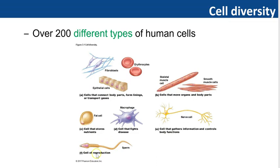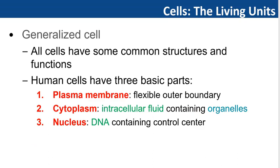There are some other cells as well, like fat cells, macrophages, and the sperm cell — the male sex cell or reproduction cell — which has a tail that allows it to move. So you can see that we have different shapes of cells with different structures, different sizes, and different functions. Although these cells vary in size, shape, and function, they exhibit many structural and functional similarities.